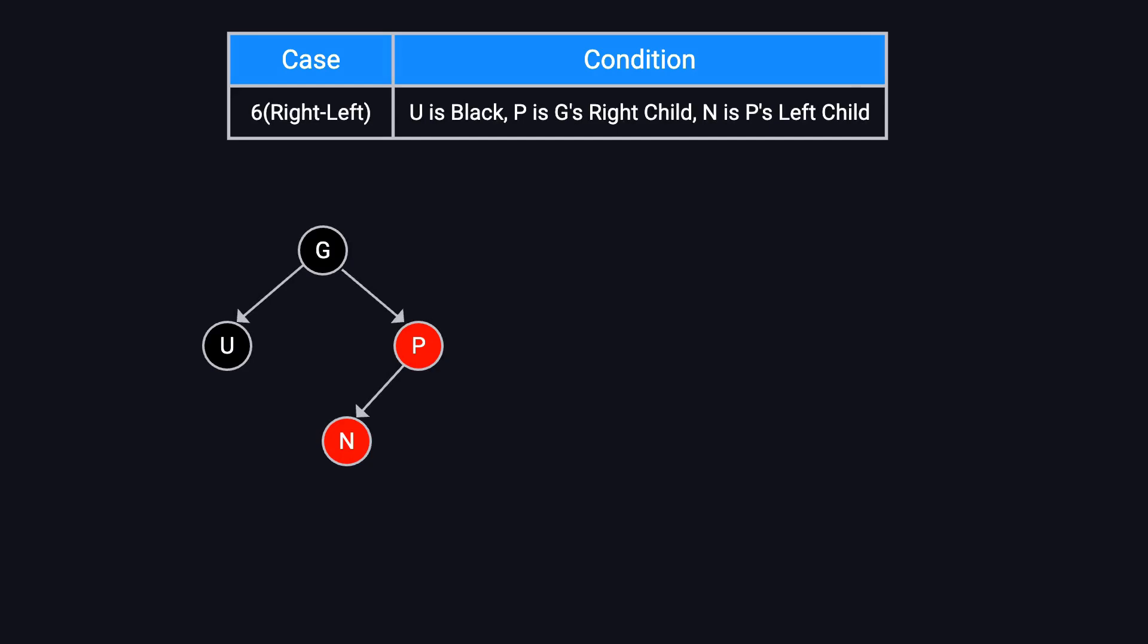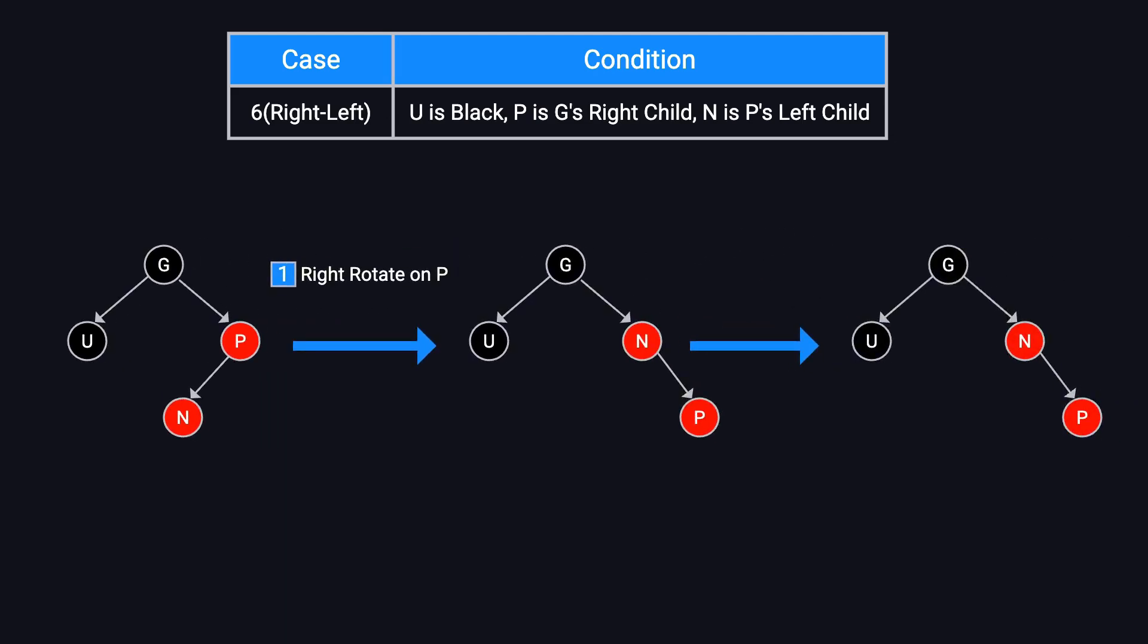Case six. Also called right-left. In this case, U is black, P is G's right child, and N is P's left child. This is the mirror image of case five. To fix this, first, we perform a right rotation on P, which transforms case six into case four. Then, we apply the steps from case four to complete the fix.